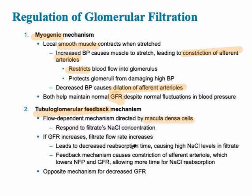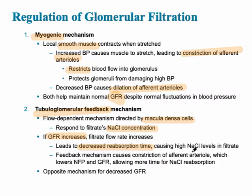The macula densa cells are specific chemoreceptors that sense sodium chloride concentration. If the GFR is too high, the filtration rate increases and leads to decreased reabsorption time. This causes high salt levels in the filtrate, allowing for more salt to be reabsorbed as it should be. It's an opposite mechanism for decreased glomerular filtration rate.